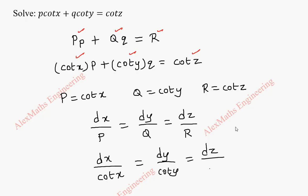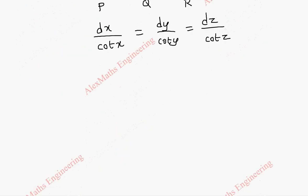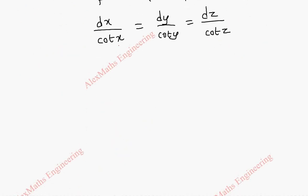dz by cot z. By taking the first two terms, we get dx by cot x equal to dy by cot y. This is the variable separable form. Let's integrate on both sides.